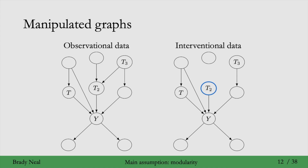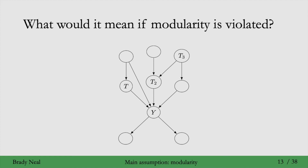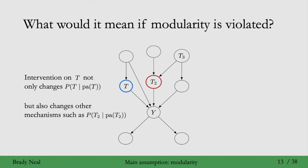In this slide, we've seen what it would mean if the modularity assumption is true, and it might be helpful to see what it would look like if the modularity assumption is violated. That would mean that if we were to intervene on t, not only would that change the distribution for t given its parents, but it would also change other conditional distributions, such as the conditional distribution for t2 given its parents. Another way of saying this is that intervening on the mechanism for t also changes the mechanism for t2. In a sense, the intervention is not local — the mechanisms are not modular.